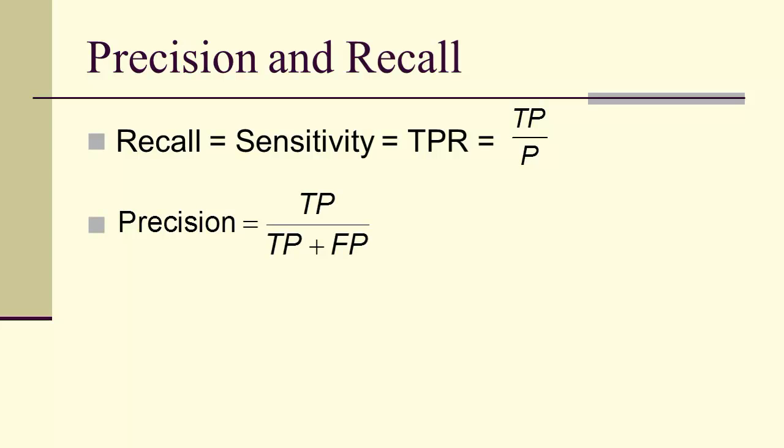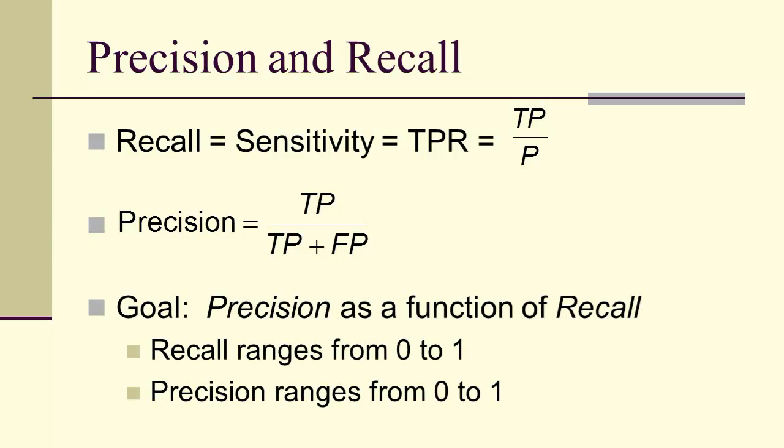The precision is the true positives over the true positives plus false positives. In other words, the true positives over the things that are actually labeled positive. What we want to do is show that we can write precision as a function of recall, where the recall will range from 0 to 1, and the precision will range from 0 to 1.